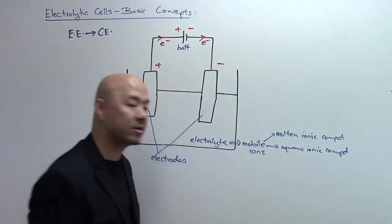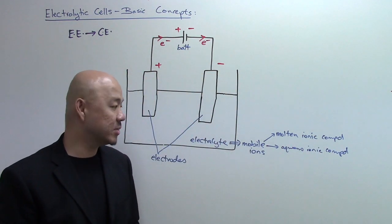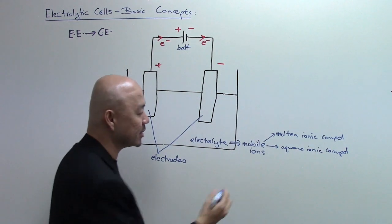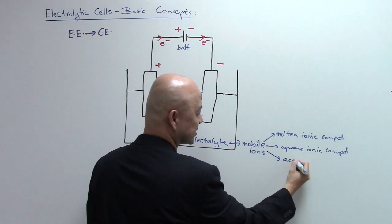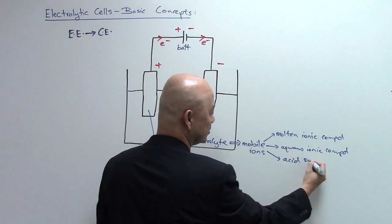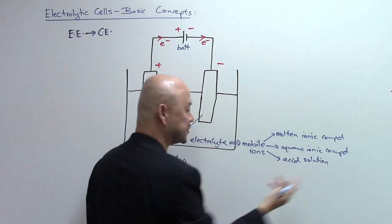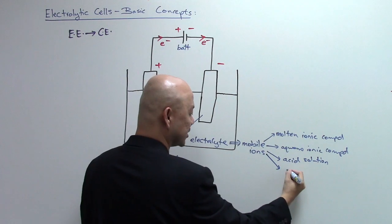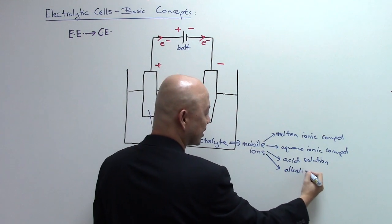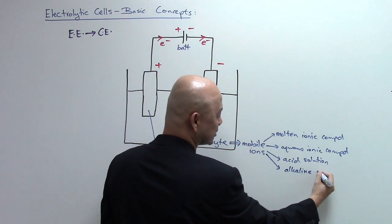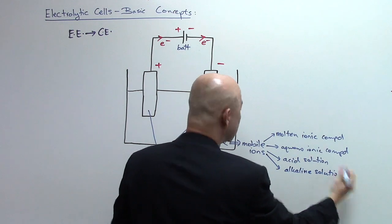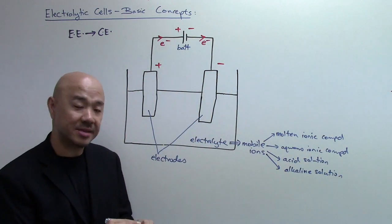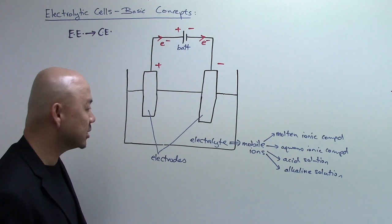Aqueous ionic compounds dissolved in water allow ions to dissociate. It can also be an acid solution, which gives you ions because acids dissociate, as well as an alkaline solution. These will all be suitable electrolytes that you'll likely see in your exam questions.